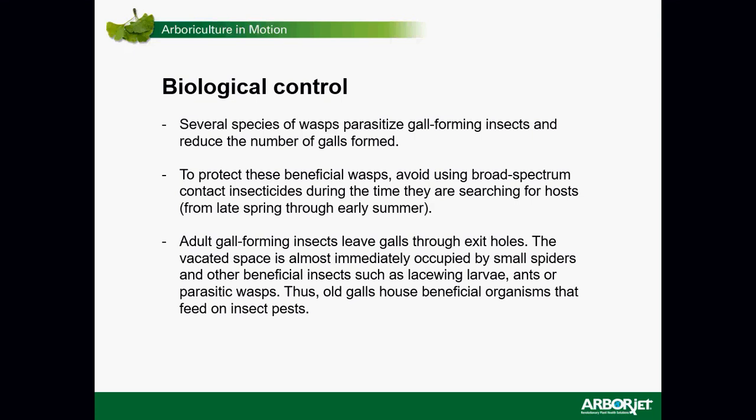We do know that there are a number of natural enemies that parasitize or prey upon these insects and frequently reduce the number of galls present. But there's only so many parasites and predators, and frequently these gall insects by far outnumber those of the beneficial insects. We do want to conserve the beneficials as much as possible by reducing the use of broad-spectrum contact insecticides where possible. Be aware that some of these galls are used as habitats for other insects such as spiders and beneficial insects.